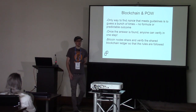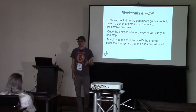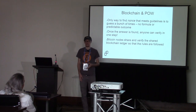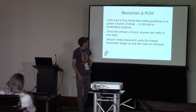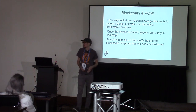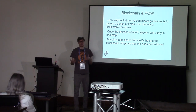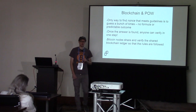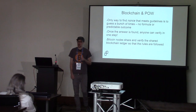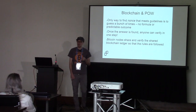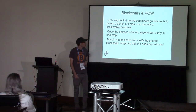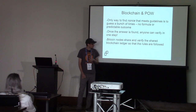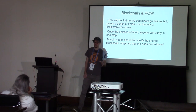The only way to find a nonce value that meets the proof of work security challenge guidelines is to guess many times — in Bitcoin, really a lot of times. There's no formula or predictable outcome to help find a solution; it's all raw computing power and guessing. But once the answer is found, anybody can run the block data back through the cryptographic hash and verify the answer is correct. Bitcoin nodes share and verify the block ledger and ensure the security challenge guidelines are followed.